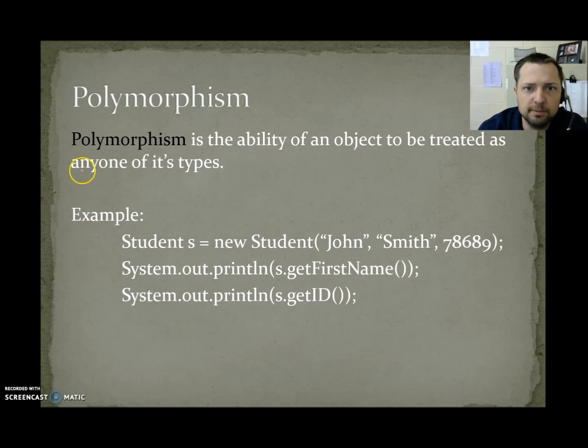Polymorphism. Polymorphism is the ability of an object to be treated as any one of its types. Student s equals new student, John Smith. System.out.print s.getFirstName. Here, s is being treated as a person because it's accessing data from the person portion of the class, using getFirstName. Here, s is treated as a student because getID comes from student. So, here it's being treated as a person. Here, it's being treated as a student. So, it can be treated as any of its types as needed to access methods and attributes.